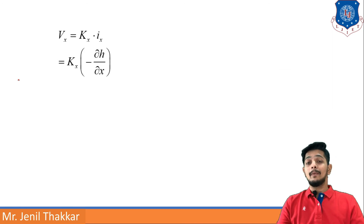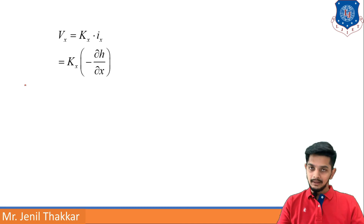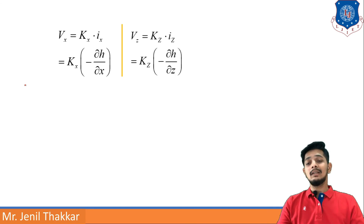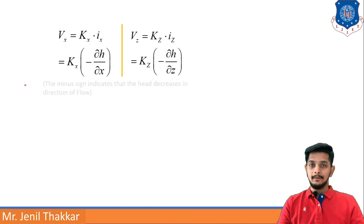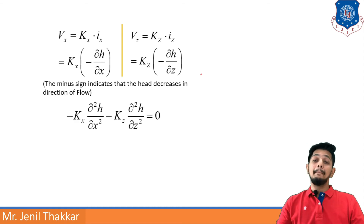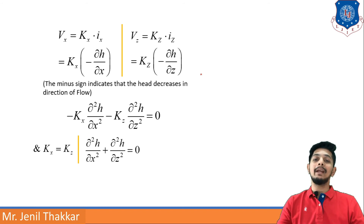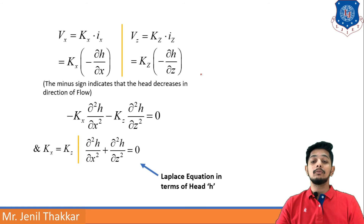If Darcy's law is valid, V = K·I. In the x-direction, Vx = Kx·Ix = Kx·(−∂H/∂x), and similarly Vz = Kz·(−∂H/∂z). The minus sign indicates that head decreases in the direction of flow. Substituting into the continuity equation gives: −Kx·(∂²H/∂x²) − Kz·(∂²H/∂z²) = 0. If Kx = Kz (isotropic), this simplifies to the Laplace equation in terms of head H: ∂²H/∂x² + ∂²H/∂z² = 0.